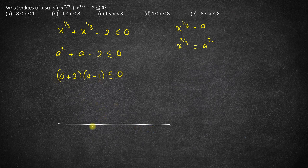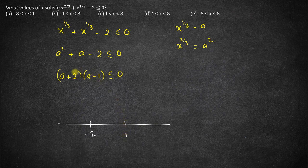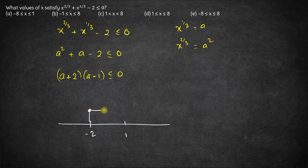So what can be the value of a? The critical points here are minus 2 and plus 1. This will be less than or equal to 0 when the value of a lies between the two critical points.